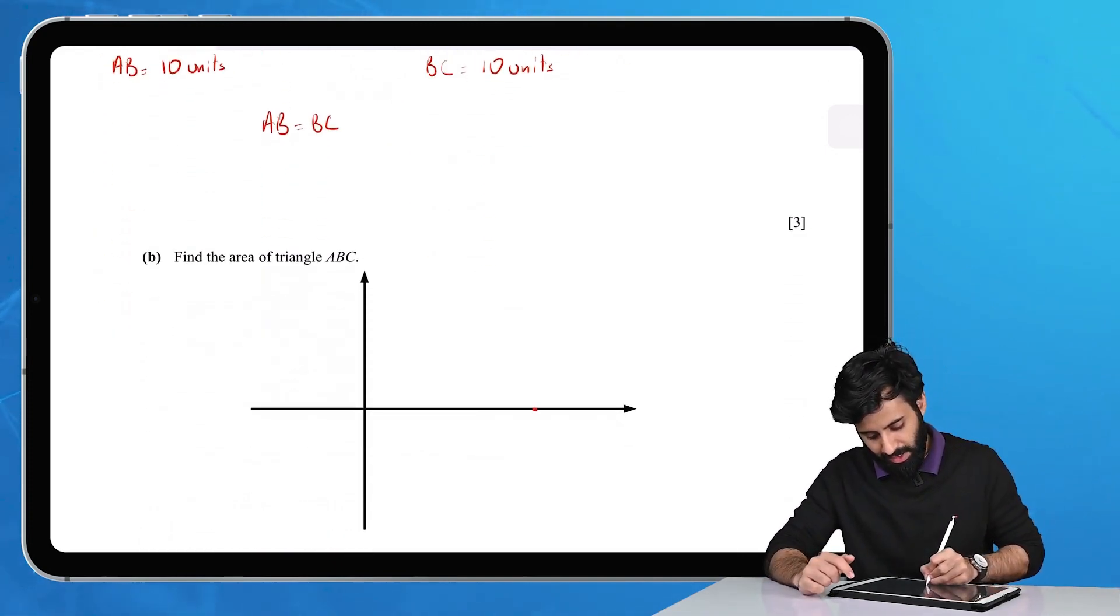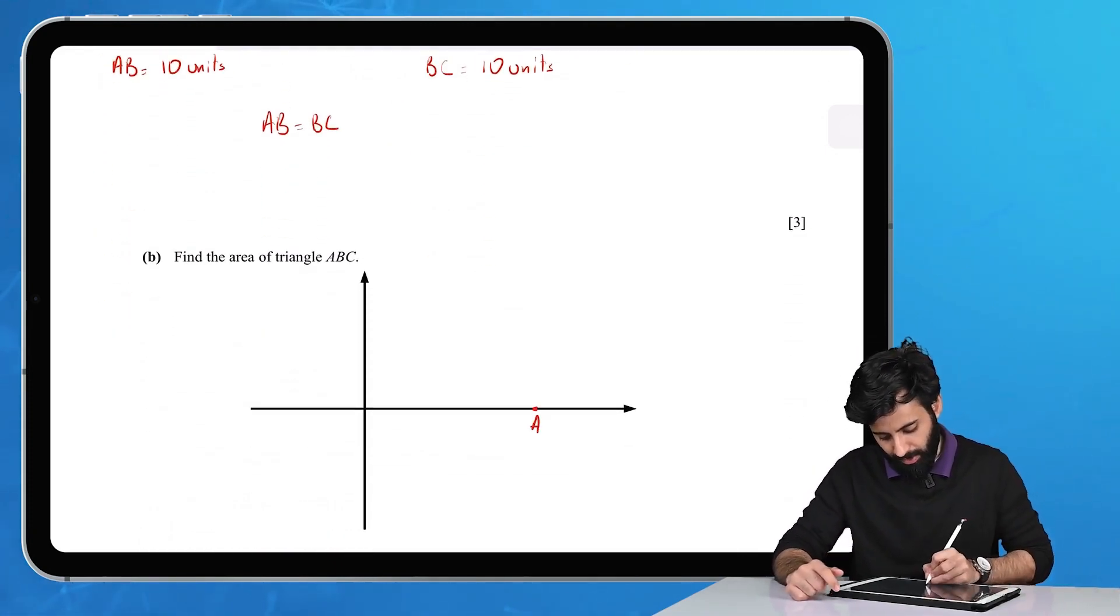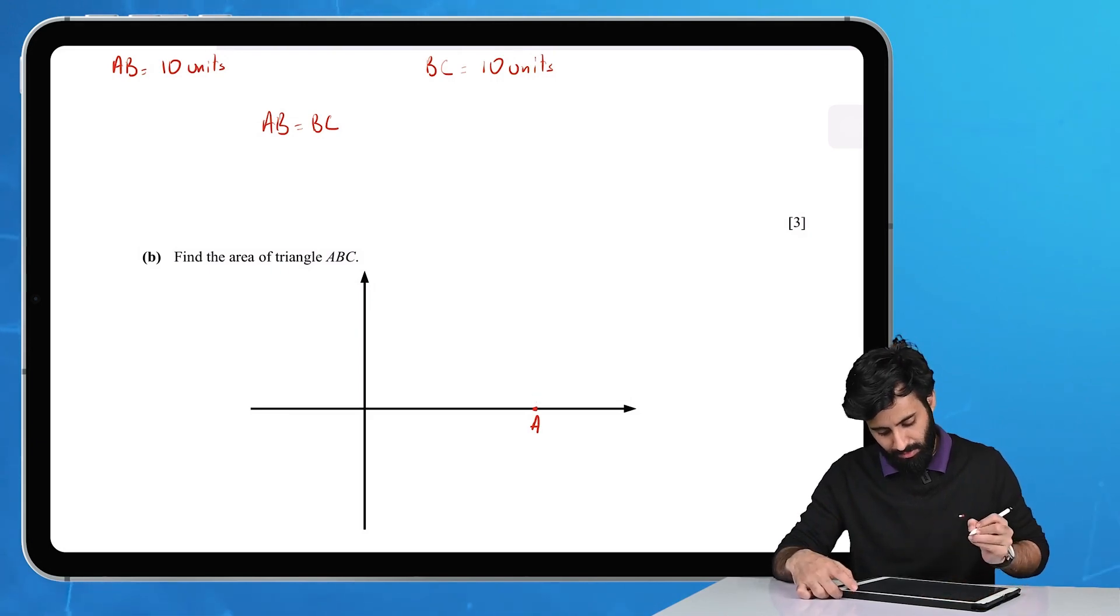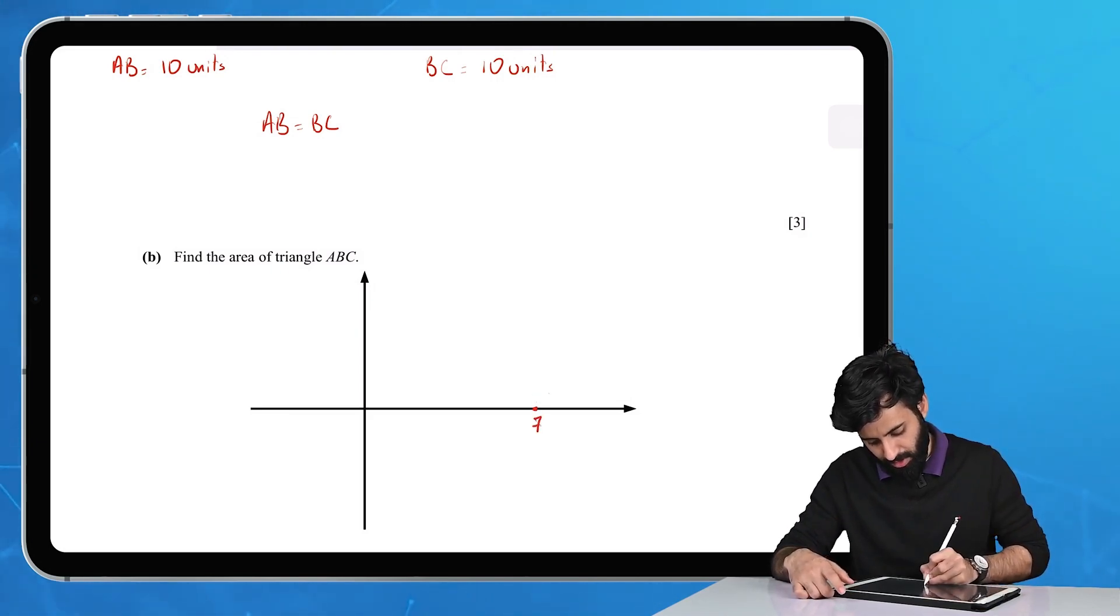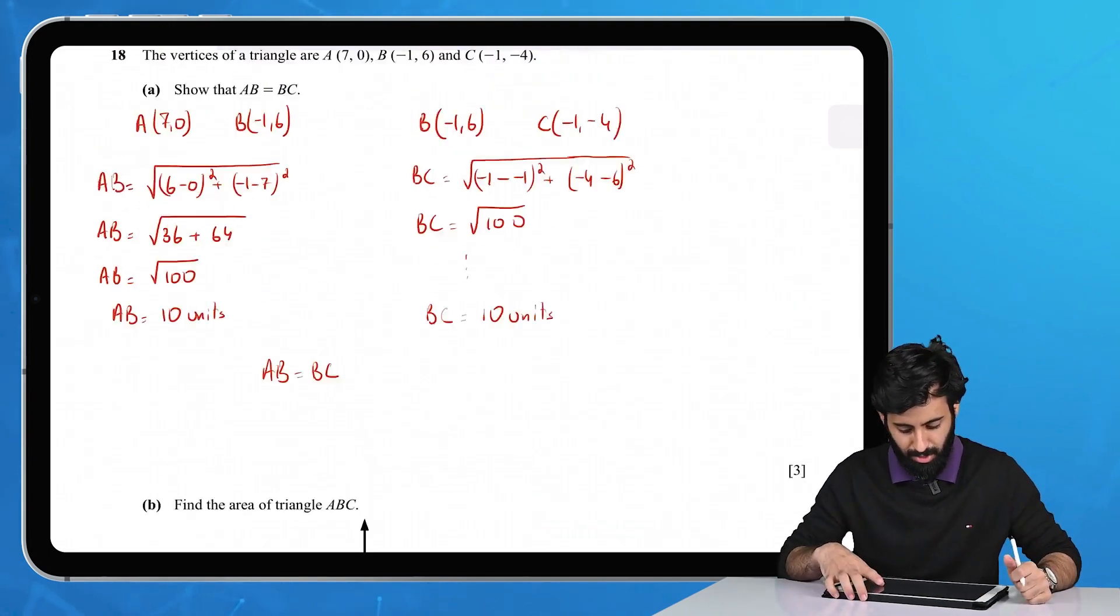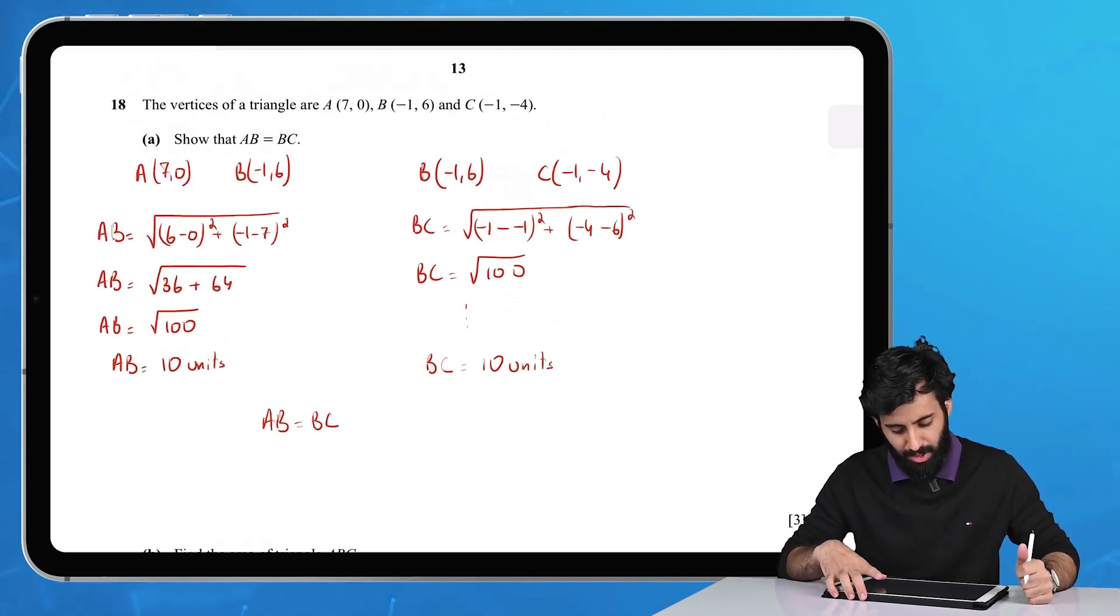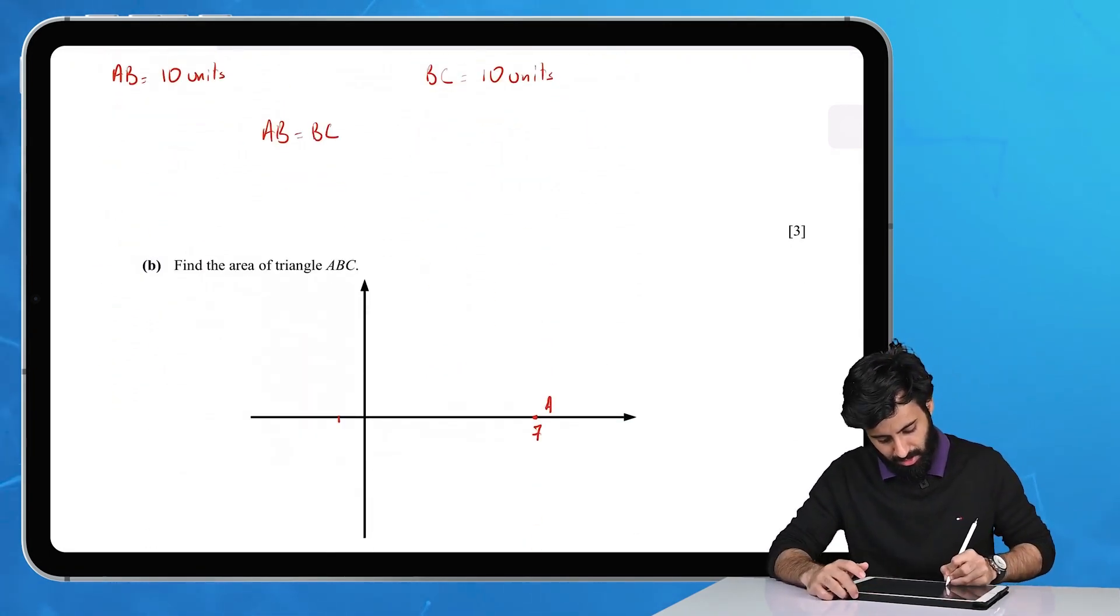There's point A. Then you have B(-1,6). So that means this is where -1 should be, this is where 6 should be, so this has to be point B.